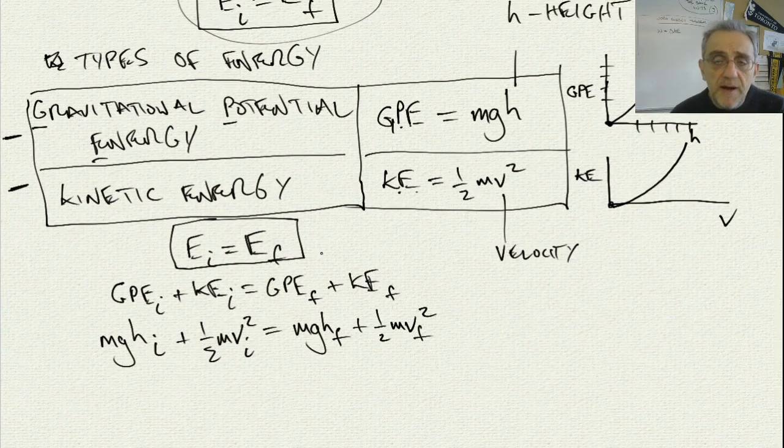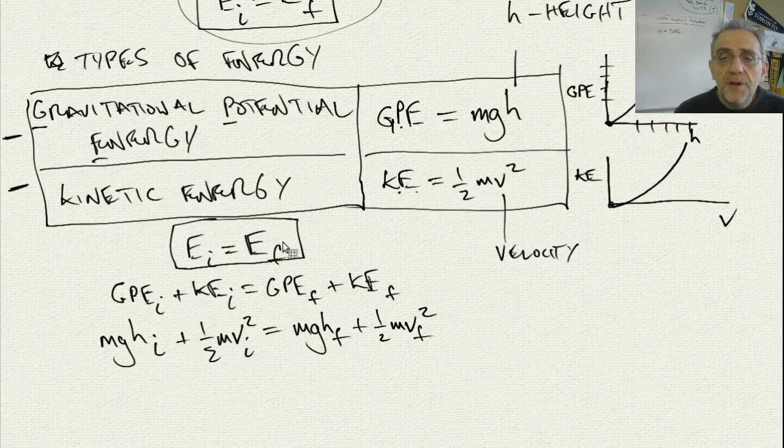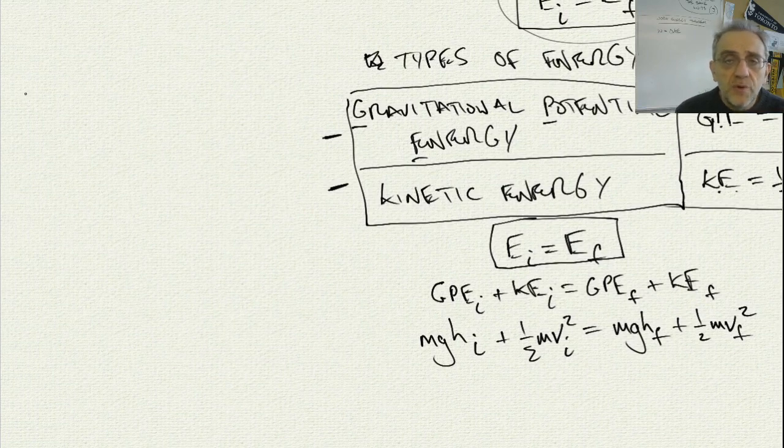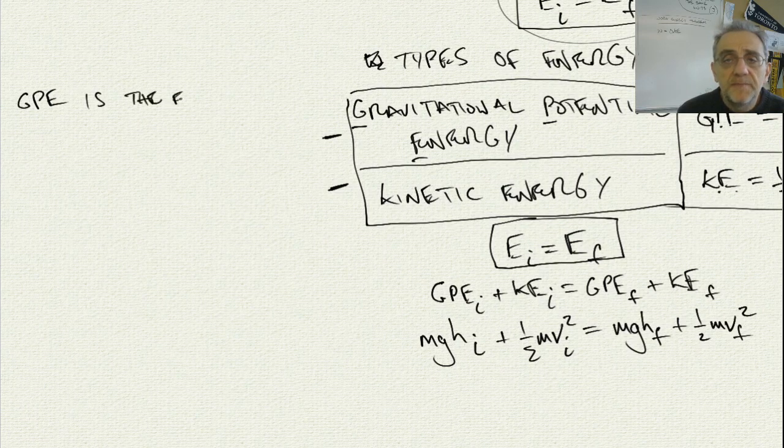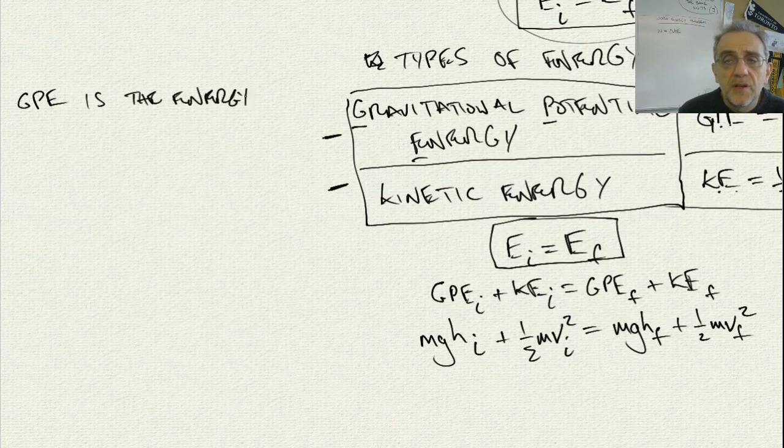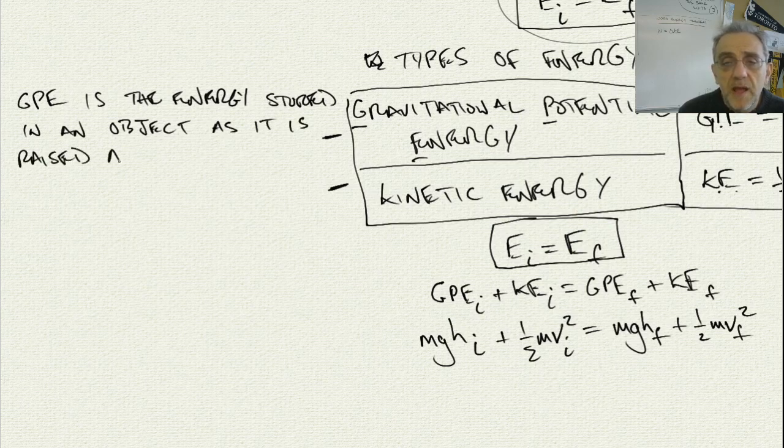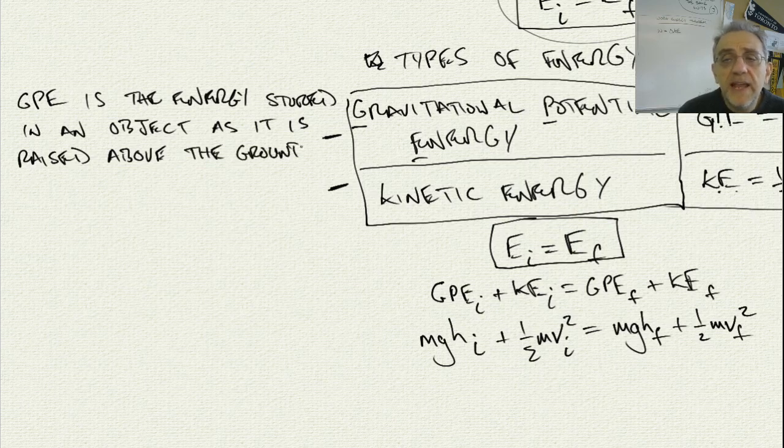The one thing I did forget to mention is what are the meanings of gravitational potential energy and kinetic energy? So gravitational potential energy is the energy stored in an object as it is raised above the ground.